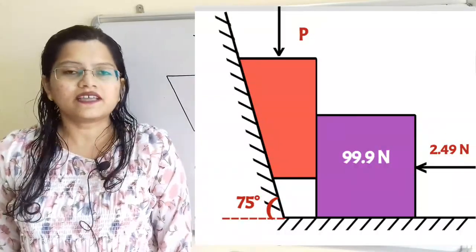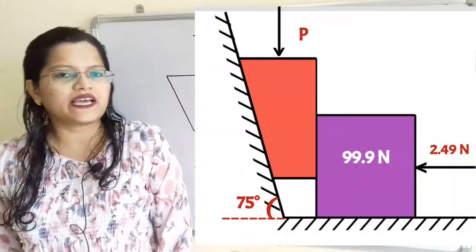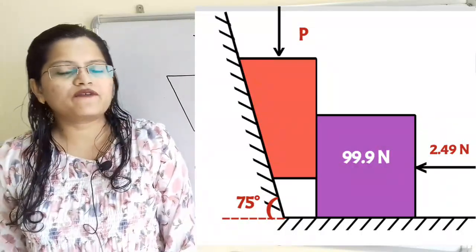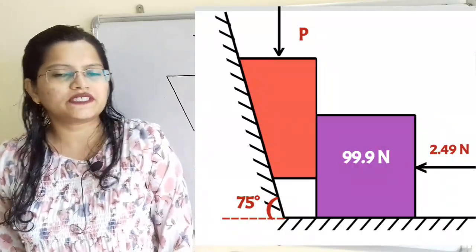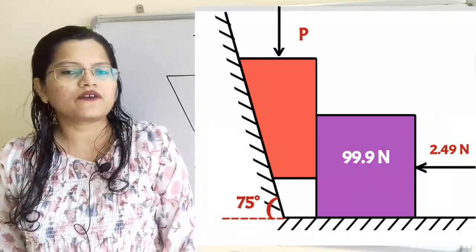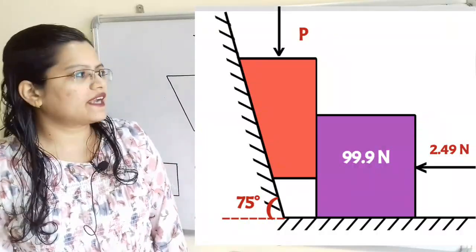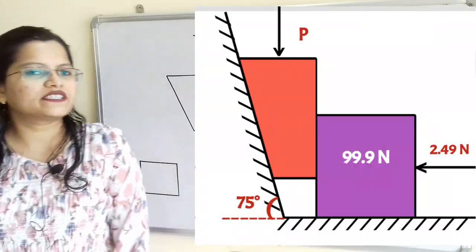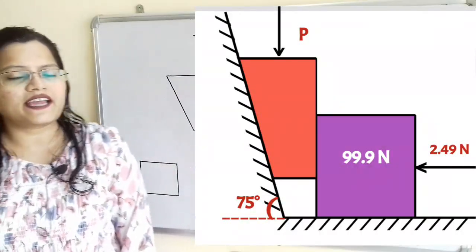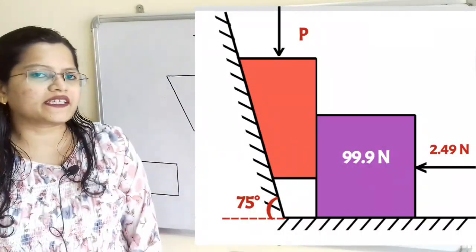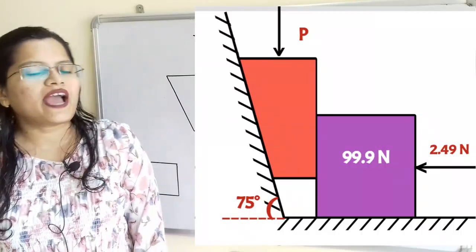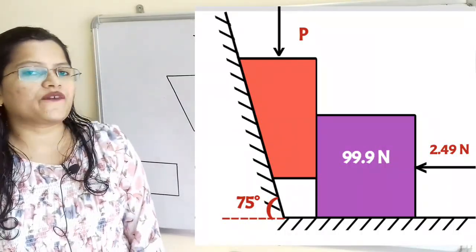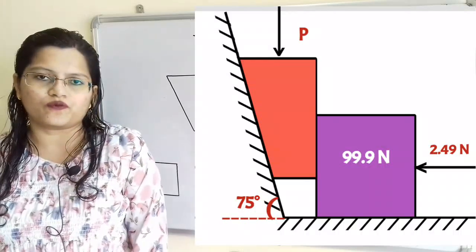Let us understand the given question with the help of a diagram. There is an applied force P on the wedge which is in contact with a block with weight 99.9 N. One surface of the wedge is inclined at an angle of 75 degrees with horizontal. We have to find out applied force P on the wedge so that the block will move.